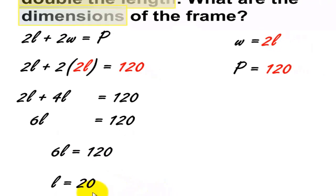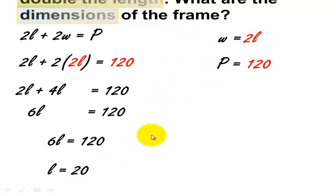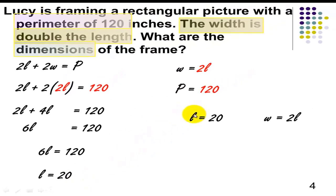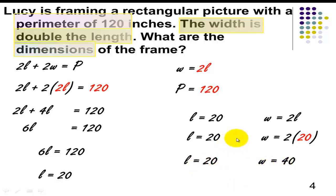Divide 6 from both sides — we'll get L equals 20. Since the length is equal to 20, we can find the value of our width. Just replace L by 20: W equals 2L, so W equals 2 times 20, which equals 40. So L is equal to 20 and W is equal to 40.